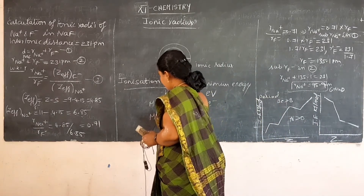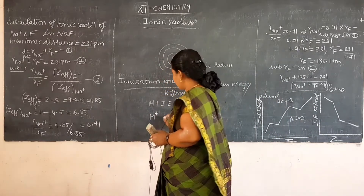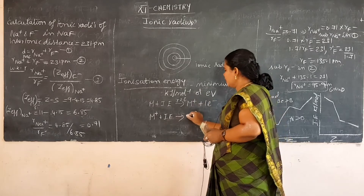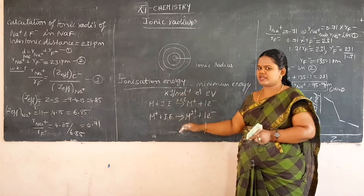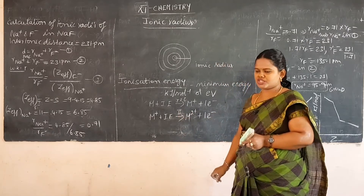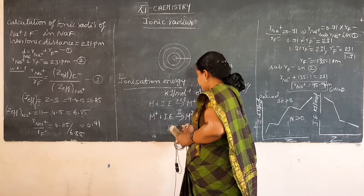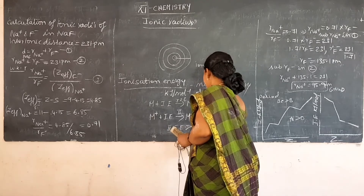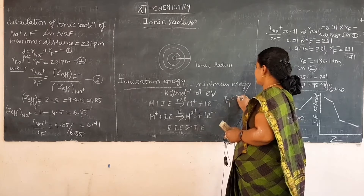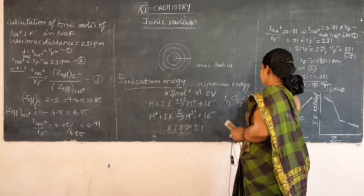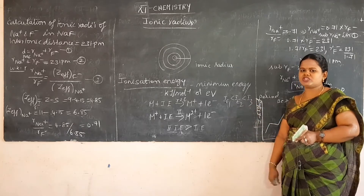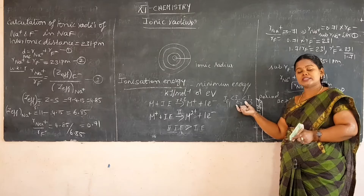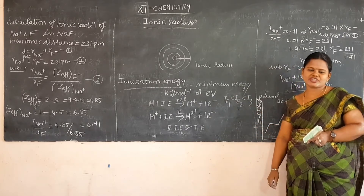From that electropositive ion, giving more energy removes another electron: M+ → M2+ + one electron. This is the second ionization energy. When comparing the first and second ionization energies, the second ionization energy is greater than the first. In general: IE1 < IE2 < IE3. The second ionization energy is always greater than the first ionization energy.